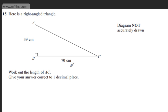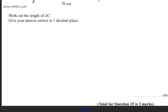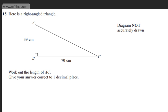This is question number 15. It says, here is a right-angled triangle. We're asked to work out the length of AC. We're asked to give our answer correct to one decimal place. The question carries three marks.